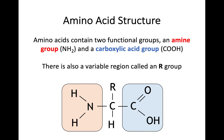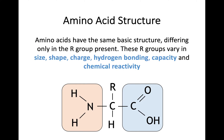Amino acids are made up of two functional groups: the amine group (NH₂, shown in the orange-pink box) and the carboxylic acid group (the COOH group in the blue box). You'll be able to recognize amino acids by seeing these two structures, but there's also an R group in the middle. The R group is used to identify which group an amino acid belongs to, and these R groups vary in size, shape, charge, hydrogen bonding capacity, and chemical reactivity.